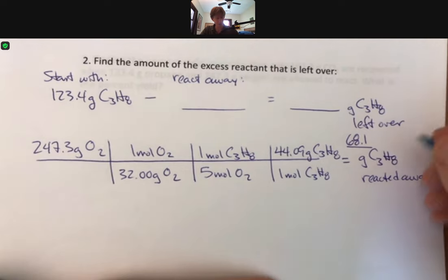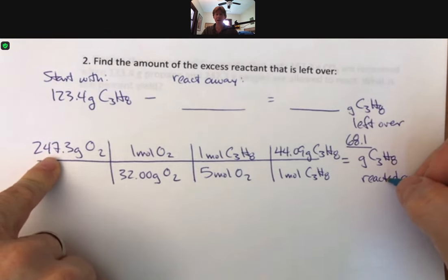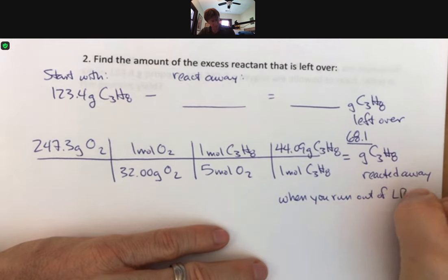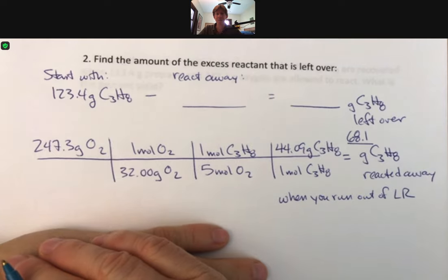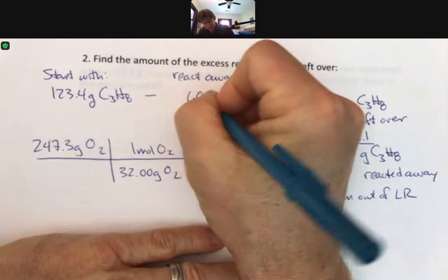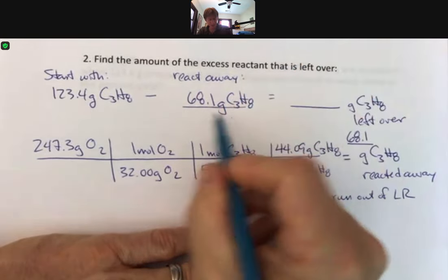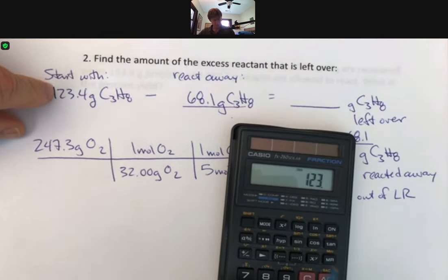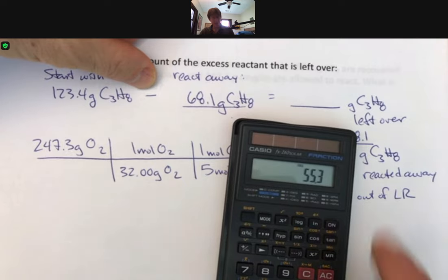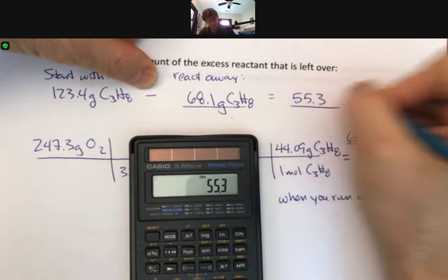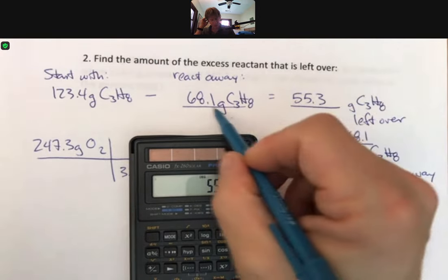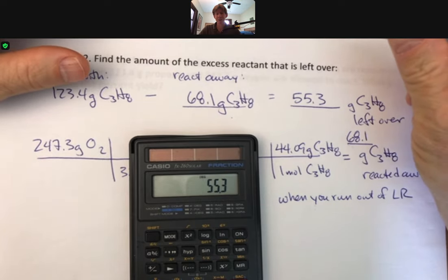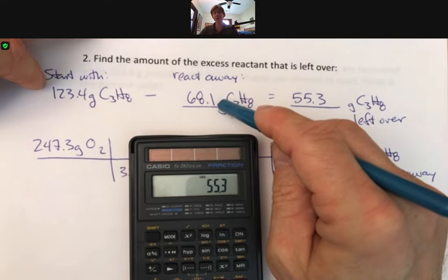And the number we get better be less than 123.4. 247.3 divided by 32, divided by 5, times 44.09. 68.1 to 3 sig figs. That is the amount reacted away when you run out of limiting reactant. Reaction can't go beyond that because it needs both of these and we just ran out. Our units are all the same here, so good. And 123.4 minus 68.1, and we get 55.3 grams of propane left over.